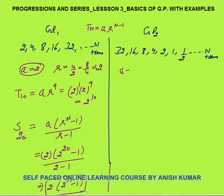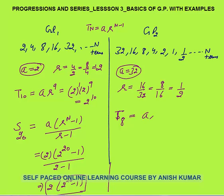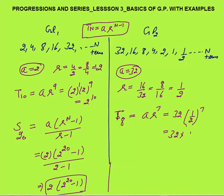The second geometric progression has first term A equal to 32. The common ratio R is 16 by 32, or 8 by 16, which gives 1/2. Can we calculate the 8th term? Term number 8 will be A·R^7. The power of R is always 1 less than the term number. So A is 32 and R^7 is (1/2)^7 = 1/128. This gives 32/128, which equals 1/4. So the 8th term is 1/4.